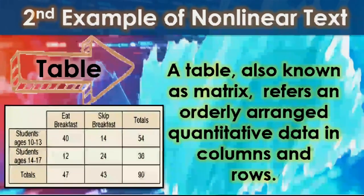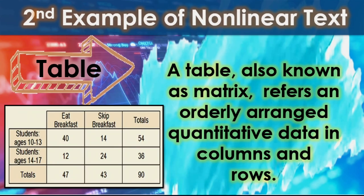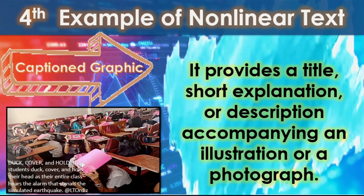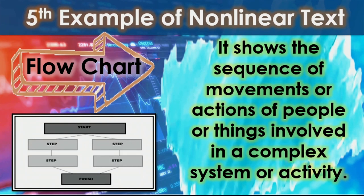For the second example of non-linear text, we have the table, also known as matrix, which refers to orderly arranged quantitative data in columns and rows. The third example is the map, which refers to a collection of data showing the spatial arrangement or distribution of something over an area. For the fourth example, we have captioned graphic, which provides a title, short explanation, or description accompanying an illustration or a photograph. And for the last example, we have flowchart, which shows the sequence of movements or actions of people or things involved in a complex system or activity.